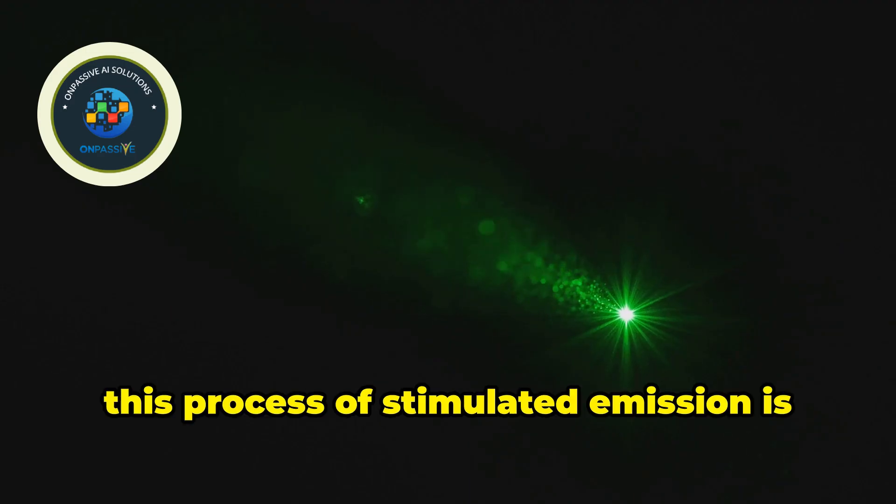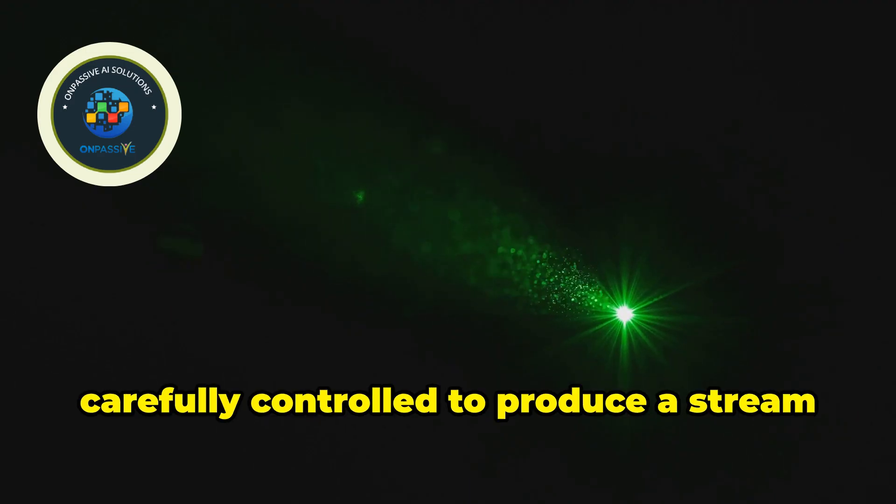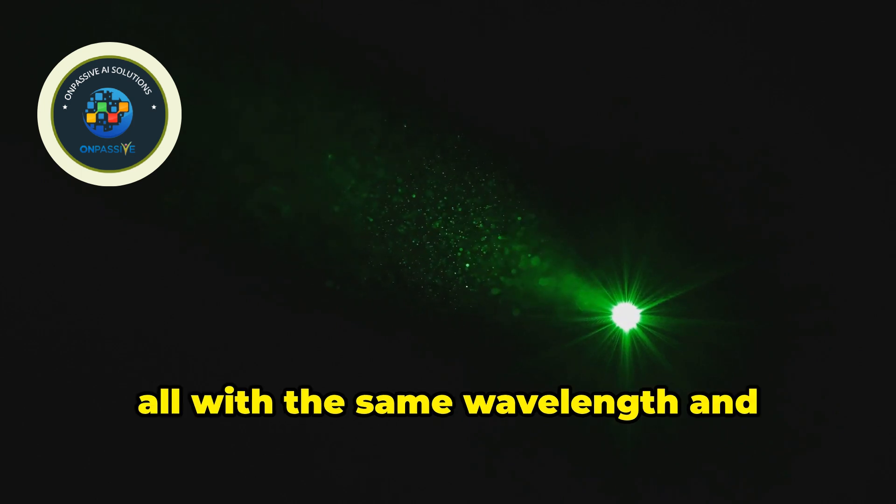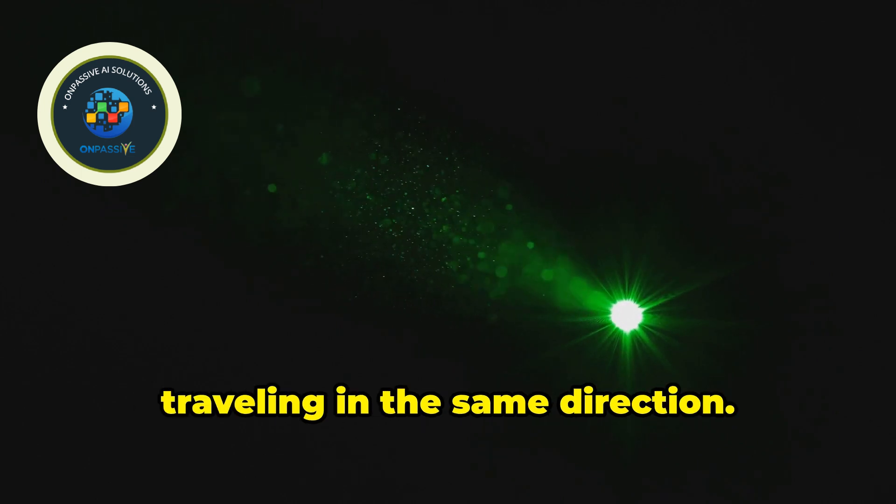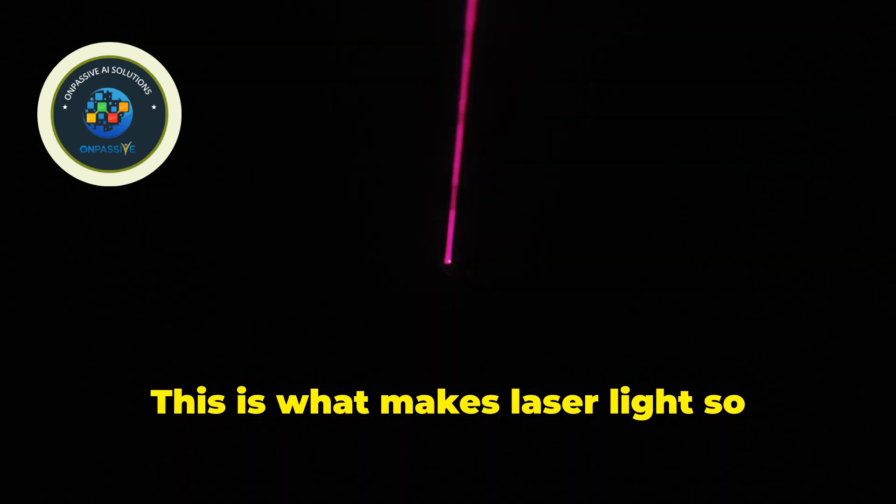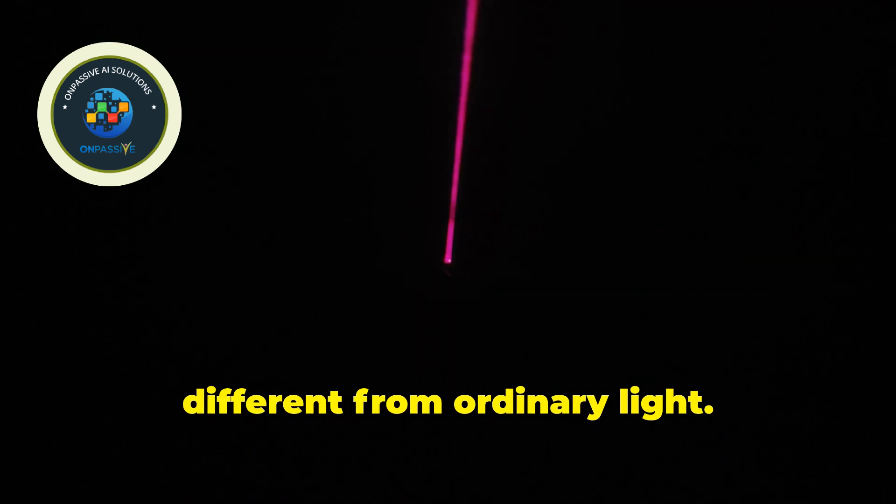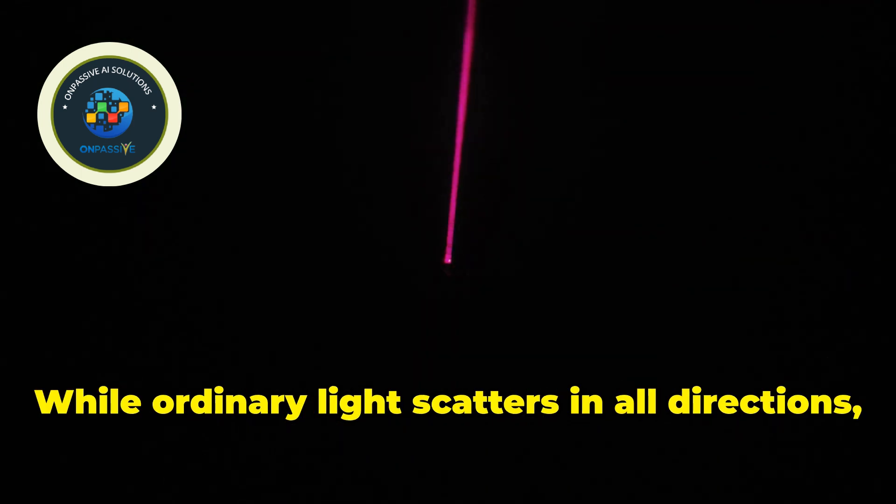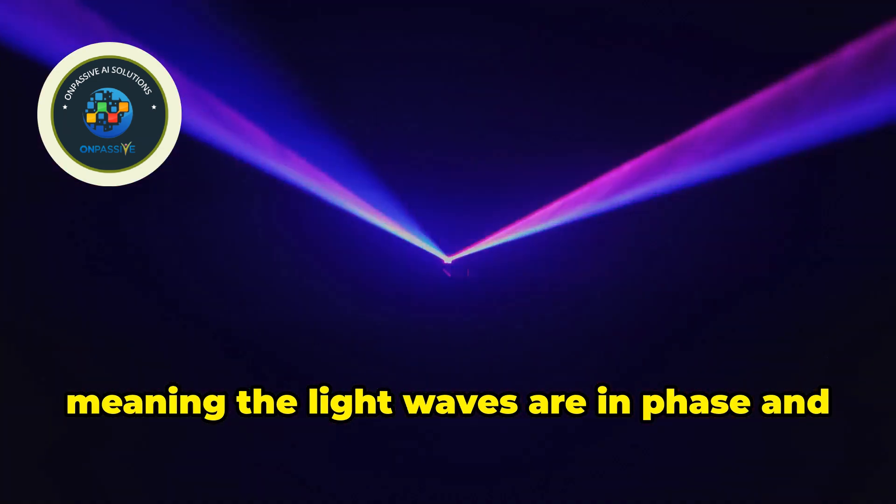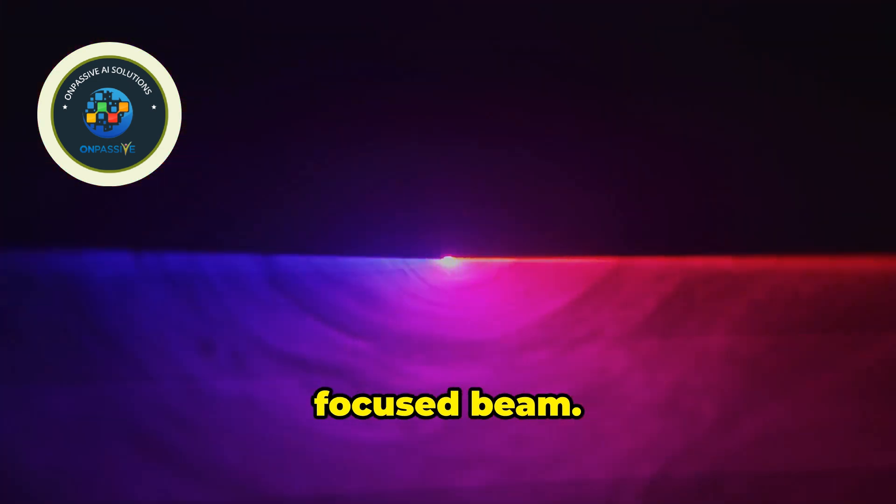In a laser, this process of stimulated emission is carefully controlled to produce a stream of identical photons, all with the same wavelength and traveling in the same direction. This control is what gives lasers their unique properties. This is what makes laser light so different from ordinary light. While ordinary light scatters in all directions, laser light is coherent, meaning the light waves are in phase and travel in a single, focused beam.